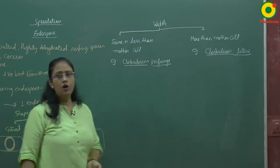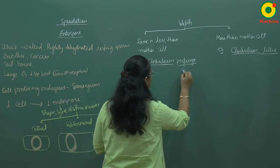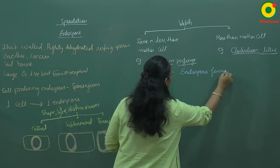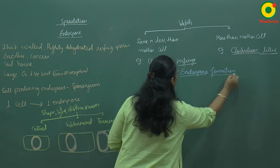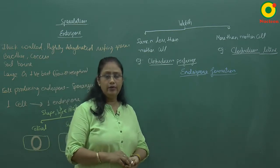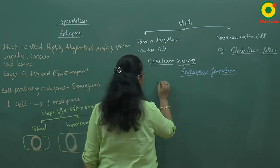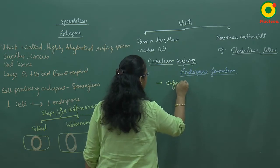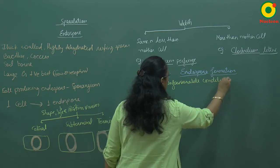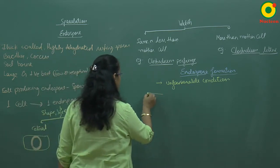Endospore formation generally takes place during unfavorable conditions, whereas binary fission occurs during favorable conditions. This is a very important point — endospore formation takes place during unfavorable conditions.